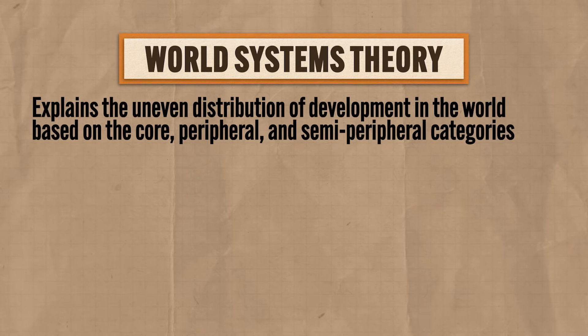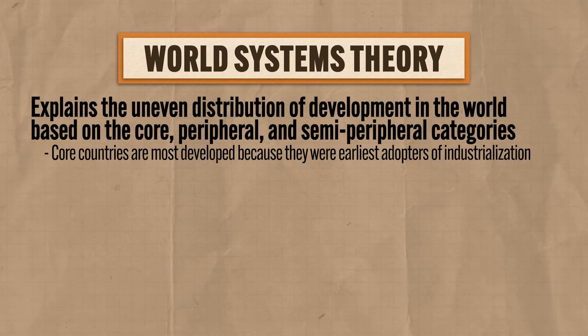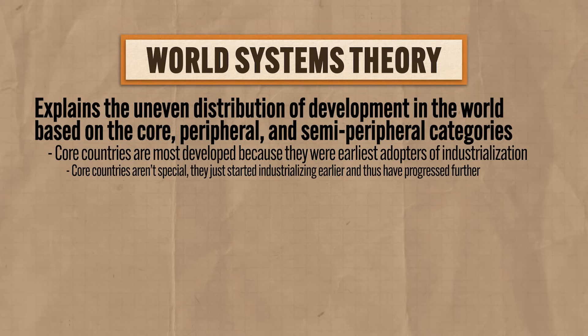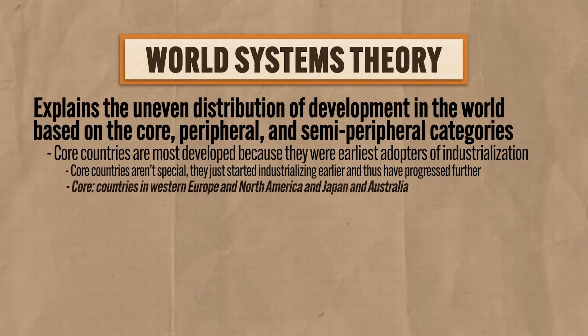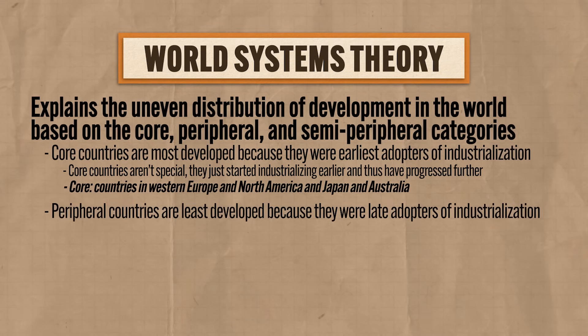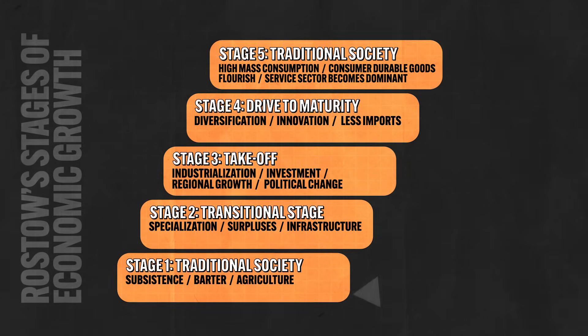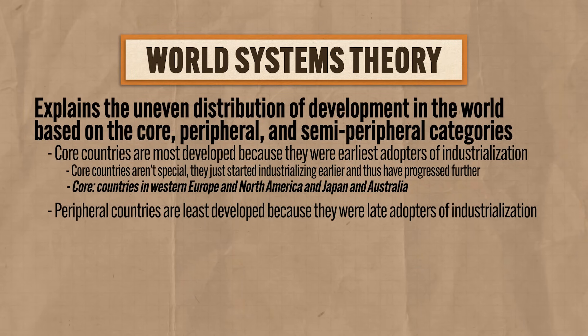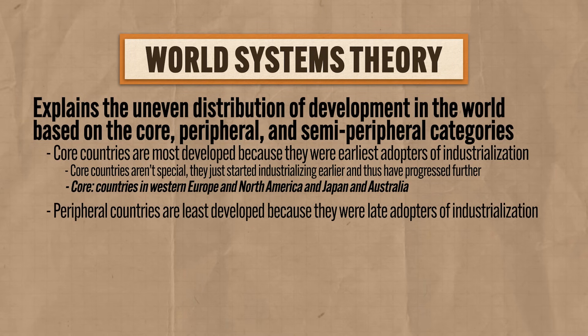Wallerstein argued that core countries are the most developed because they were the earliest adopters of industrialization — they're the ones who started the race first. Core countries have access to the best technology, the most complex manufacturing processes, and societies characterized by mass consumption. According to this theory, core countries aren't special; they just started industrializing earlier and thus have progressed further. This includes countries in Western Europe, North America, Japan, and Australia. Peripheral countries, like those in Sub-Saharan Africa, are the least developed because they are late adopters of industrialization. But here's where Wallerstein takes his explanation further than Rostow — according to World Systems Theory, there is a very significant reason peripheral countries industrialized late.